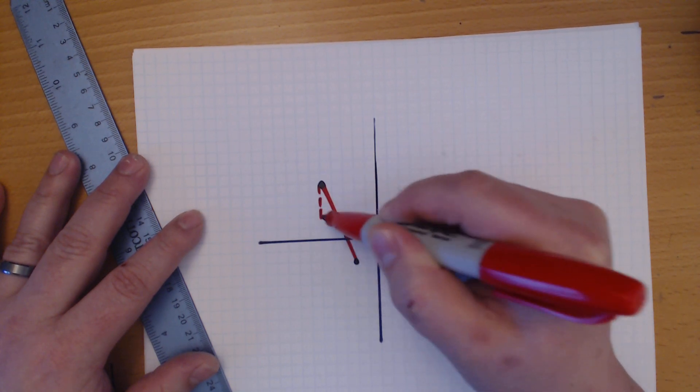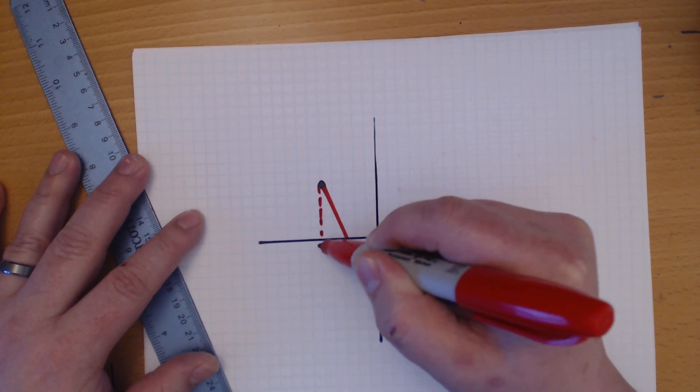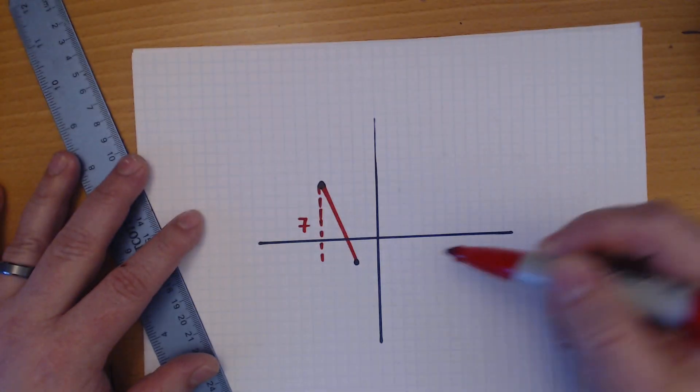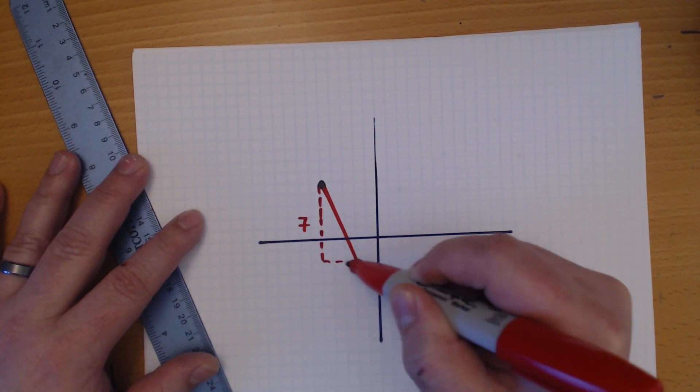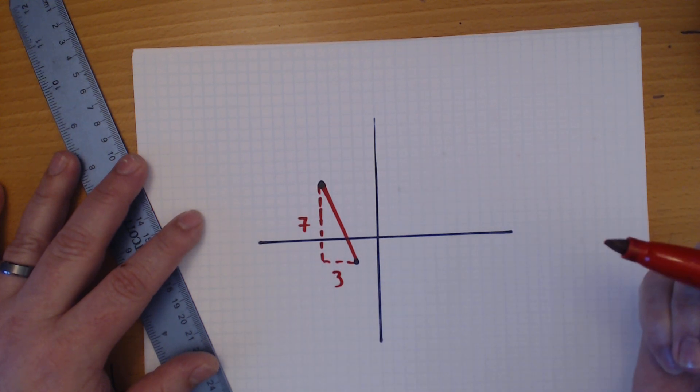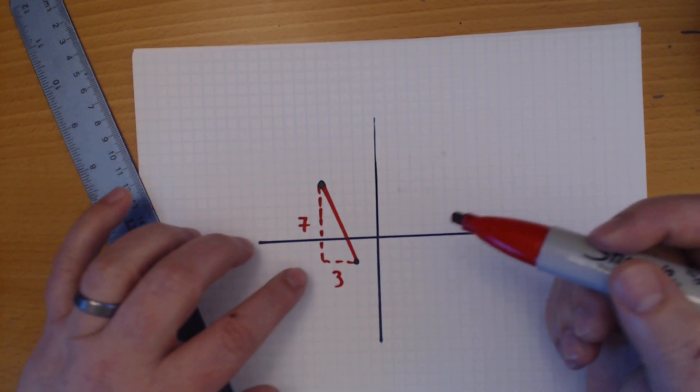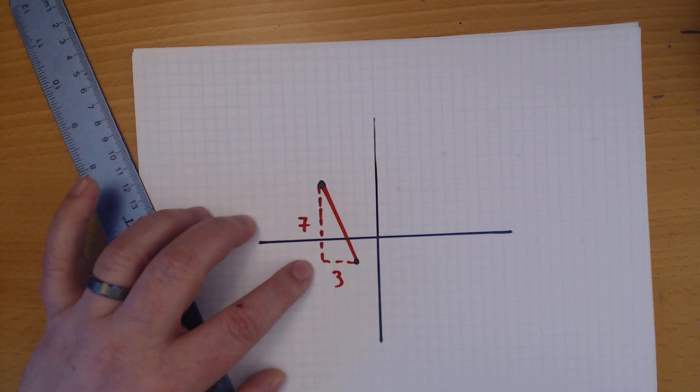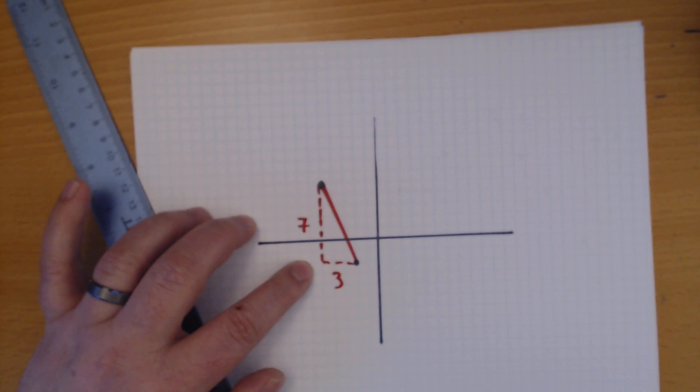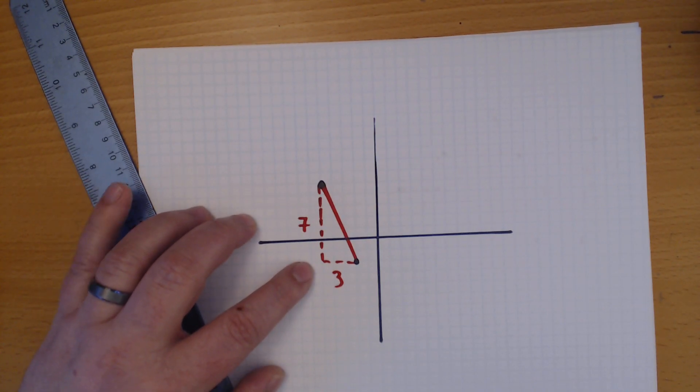So, following the same process, 1, 2, 3, 4, 5, 6, 7. 1, 2, 3. So, I made this triangle in a different direction, so to speak, than the first one that I did. But that's okay, as long as we made a right triangle.